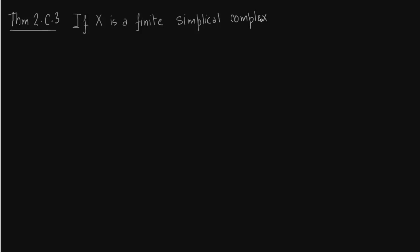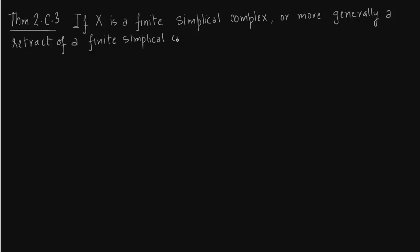So now we should write this down. You can also find it on page 179 of Hatcher. So writing down the theorem: if X is a finite simplicial complex, or a retract of a finite simplicial complex, and f is a map which takes X to itself, and the Lefschetz number of this map is non-zero, then f has a fixed point.